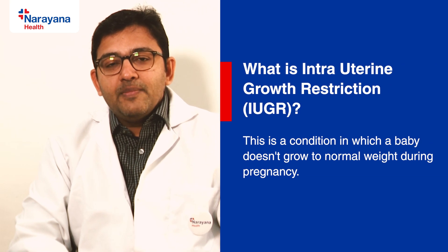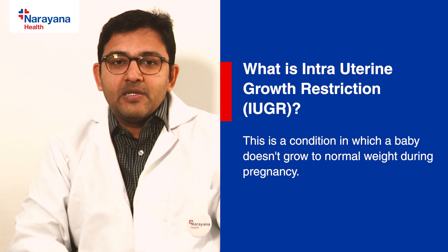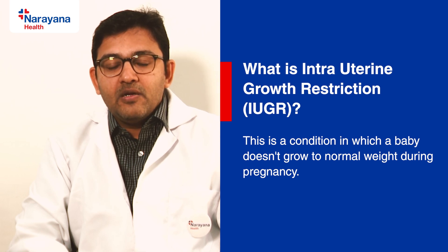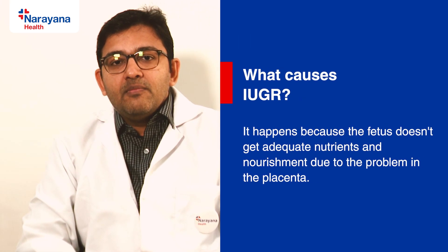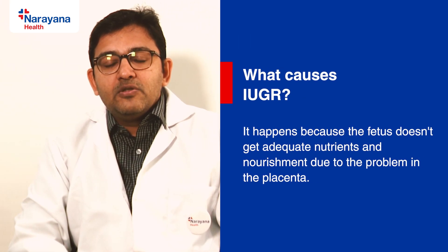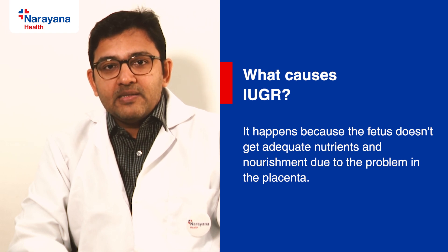IUGR means the baby is not growing adequately as per a particular gestational period of the pregnancy. In short, the baby does not grow as required for that particular month of pregnancy. This happens because the baby does not get adequate nutrition and nourishment required during pregnancy.